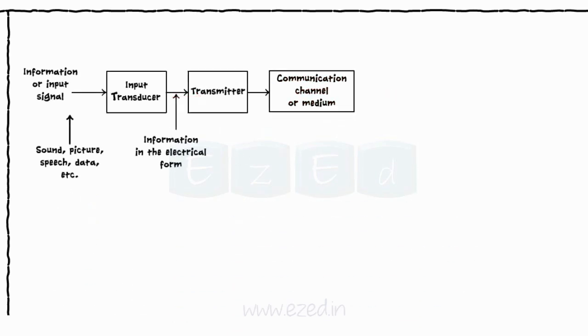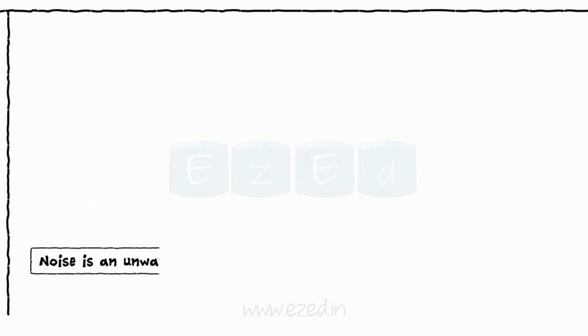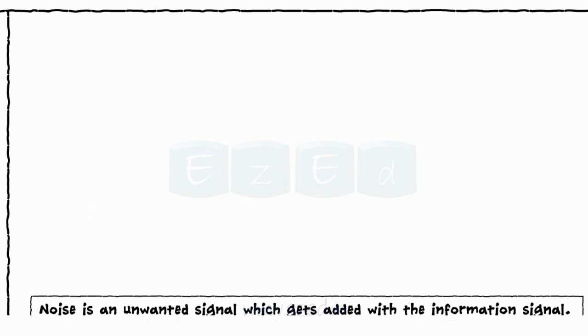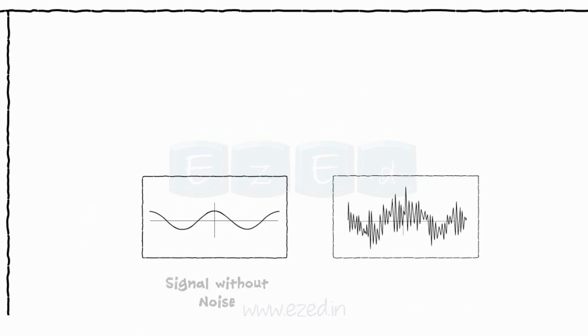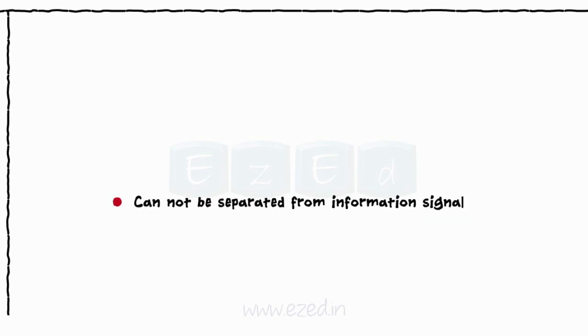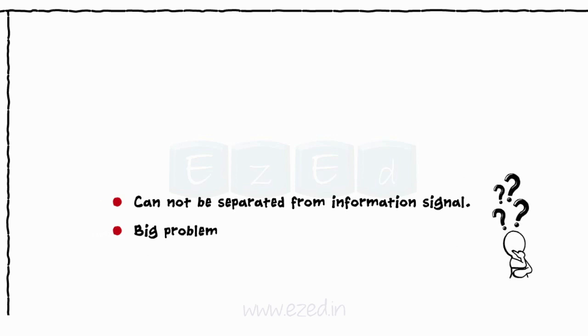The next stage is noise. Noise is an unwanted signal which gets added with the information signal. Due to noise, the quality of the signal degrades. Once added, noise cannot be separated from the information signal. Thus, noise is a big problem in the communication system.